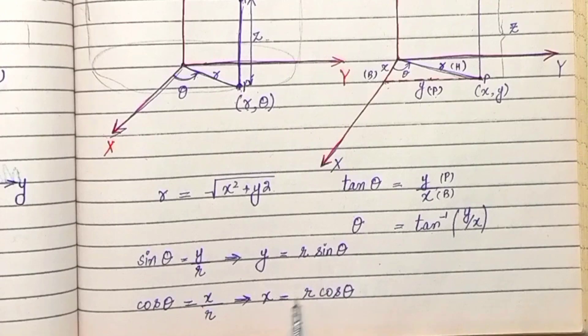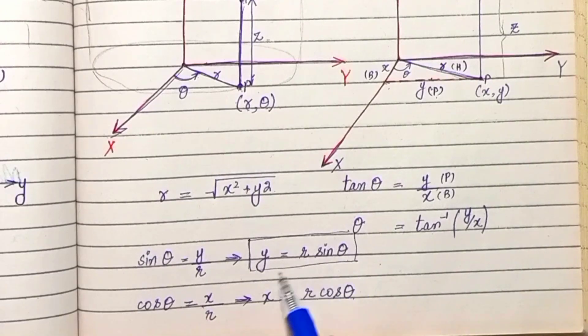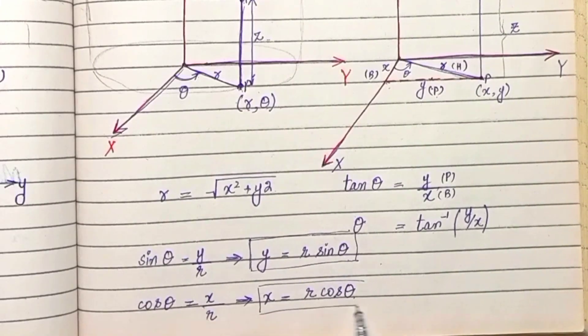To y barabar ho jayega r sin theta ke. cos theta barabar hai x divided by r ke, x is the base and r is the hypotenuse. To x ko agar hum ek side pe chhod dein to r cos theta ke barabar ho jayega.